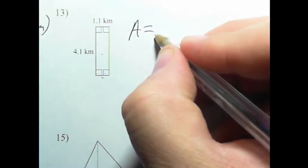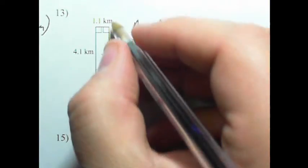The area of a rectangle is just simply the length times the width. I can call this the width. I can call this the length.